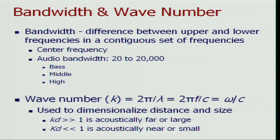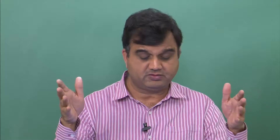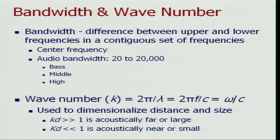Bandwidth is the difference between the upper and lower frequencies in a contiguous set of frequencies. So if you have F1 to F2, your bandwidth is F2 minus F1. Each band has a center frequency. The audio bandwidth is 20 to 20,000 hertz, and we often use the terms bass, middle, and high (or treble) to allude to whether the frequency being discussed is low, middle, or high frequency.